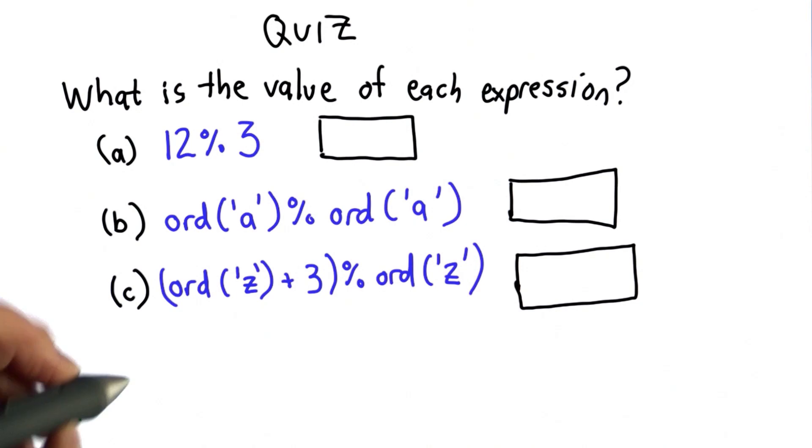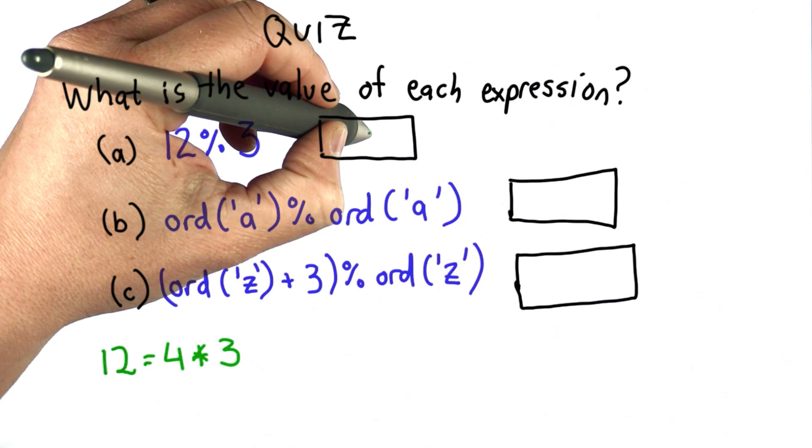Here are the answers. So for the first question, we had 12 modulo 3, and 12 is equal to 3 times 4. So that means if we divide 12 by 3, we get 4 with no remainder. So that means the result of 12 modulo 3 is 0.